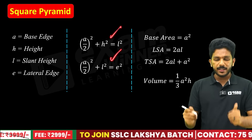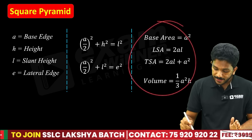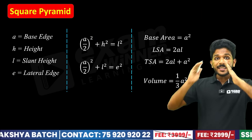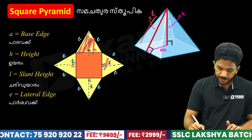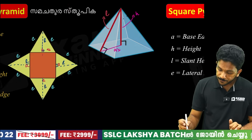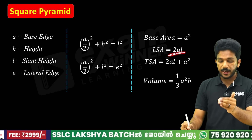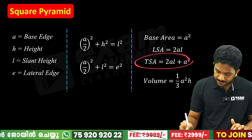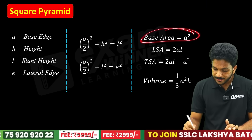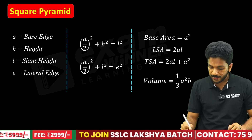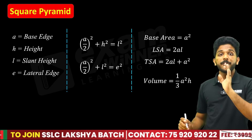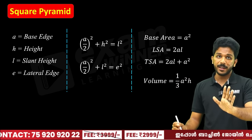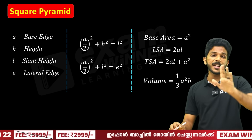If you study those two equations from the same diagram, it is simple. Now we will see the base area. The base area is a square, so it is A². The lateral surface area (LSA) uses triangles. Each triangular face has area (1/2) × A × L, and there are 4 faces, giving 2AL. So TSA = 2AL + A². The volume is 1/3 × A² × H.